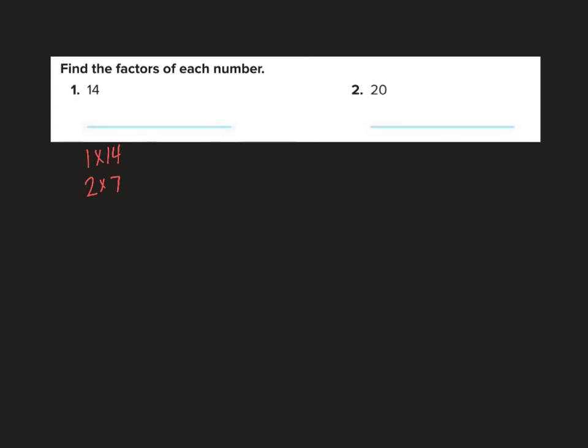Does 4? 4, 8, 12, 16. Nope. 5, no. 6, 6, 12, 18. Nope. I think we got them all. So the factors of 14 are 1, 2, 7, and 14.